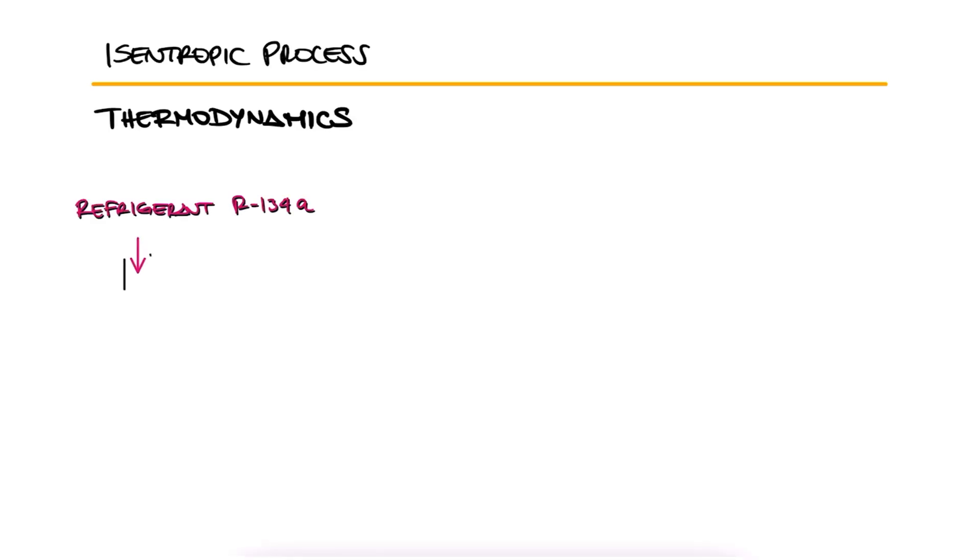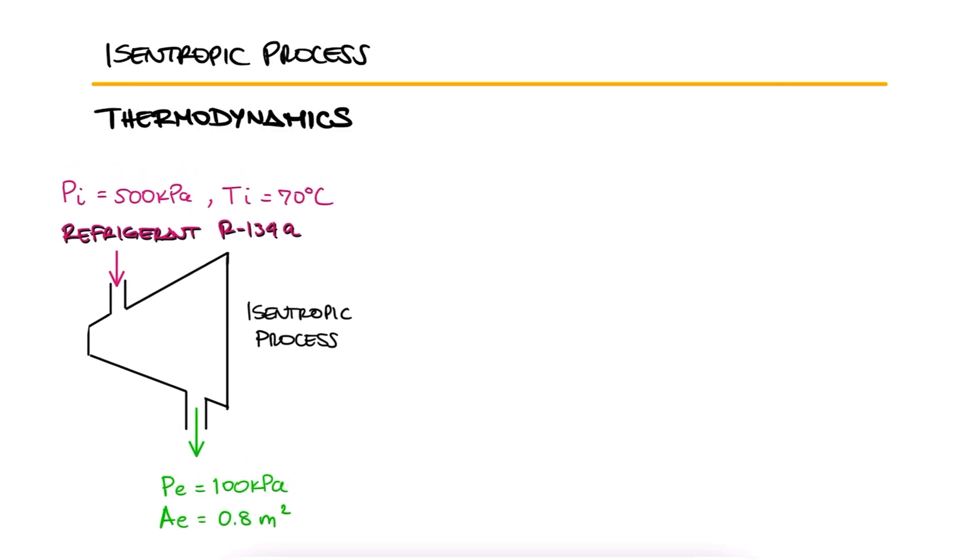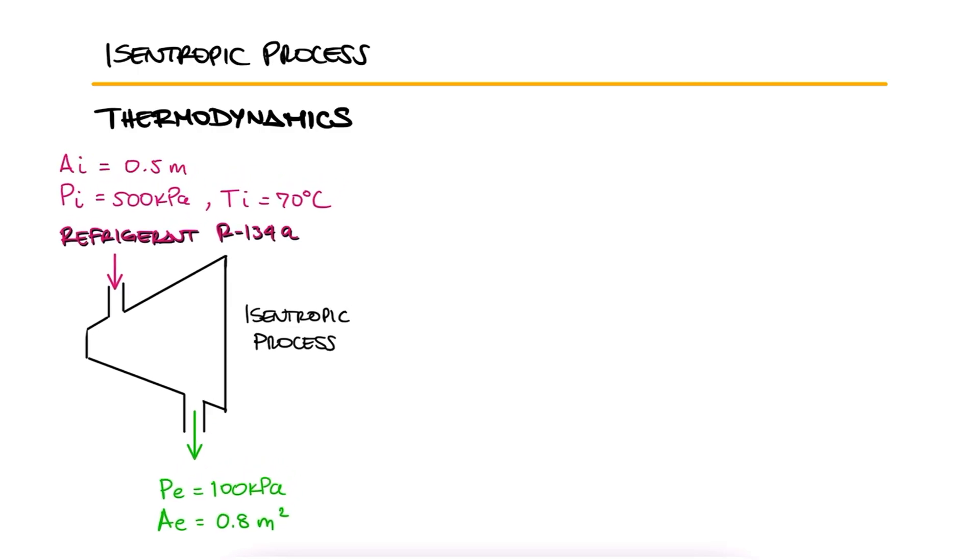Refrigerant 134A enters a steady flow turbine and is expanded isentropically from 500 kPa and 70 degrees Celsius at the inlet to 100 kPa at the outlet. The outlet area is 0.8 m² and the inlet area is 0.5 m². Calculate the inlet and outlet velocities when the mass flow rate is 0.6 kg per second.